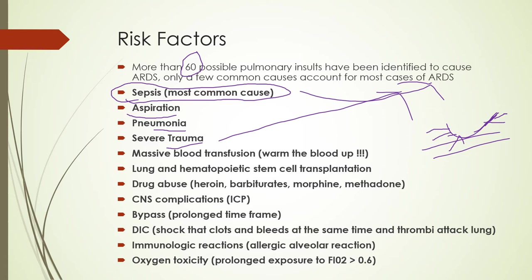Disseminated intravascular coagulopathy — DIC — is another risk factor. These patients bleed and clot at the same time. If you see bruising, you have to give them platelets. If you see no bruising, you may have to give them heparin because they might be showering pulmonary emboli. DIC is a very sick situation.